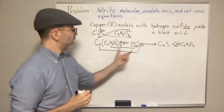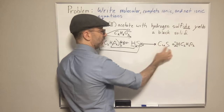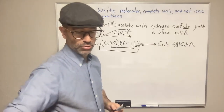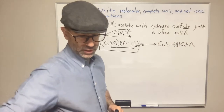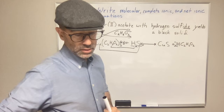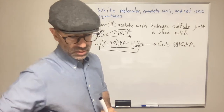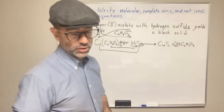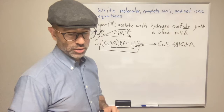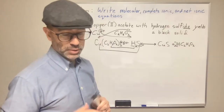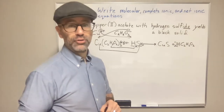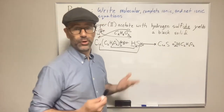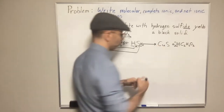H₂S is a gas. For copper sulfide, we look at solubility rules for sulfides. The rules say all salts containing S²⁻ are insoluble except for group 1, group 2 elements (alkali metals and alkaline earth metals) and ammonium. We don't have any of those exceptions, so copper sulfide is insoluble — it's a solid.